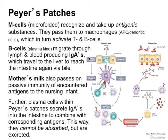Mother's milk also passes on past immunity of encountered antigens through the nursing infant. Those IgAs also go through the mother's milk and get brought through there. Furthermore, plasma cells within the Peyer's patches secrete IgAs — these antibodies — into the intestine as well. Then they combine with the corresponding antigens there, and this way the antigens cannot be absorbed but will be excreted.